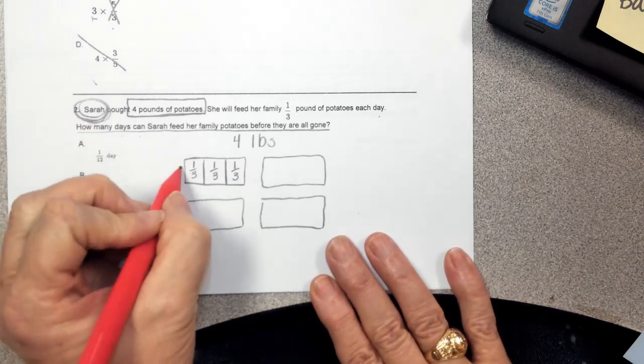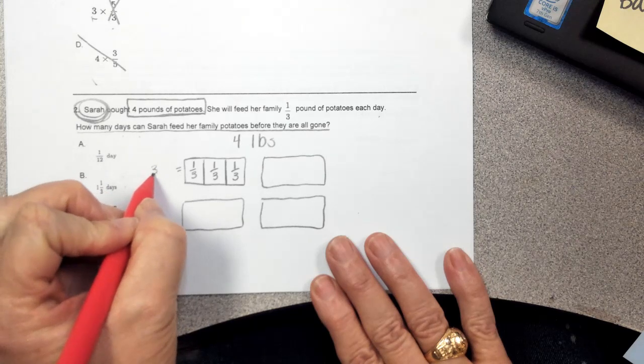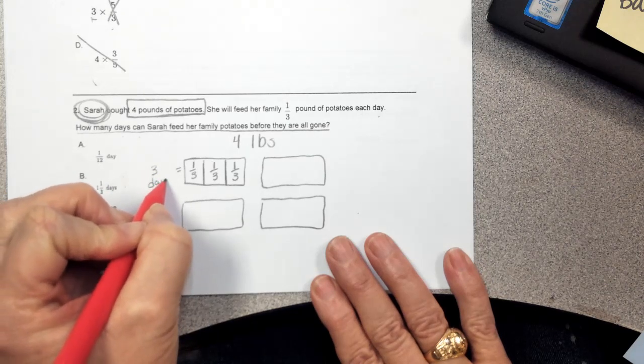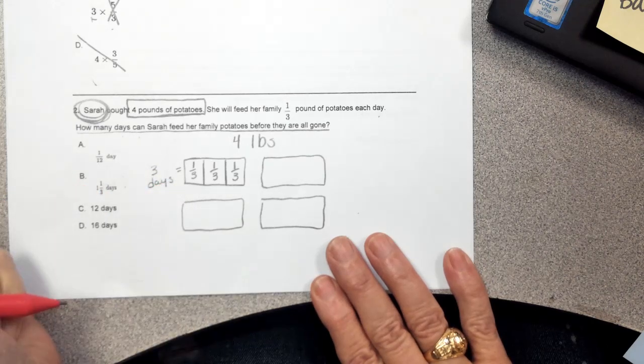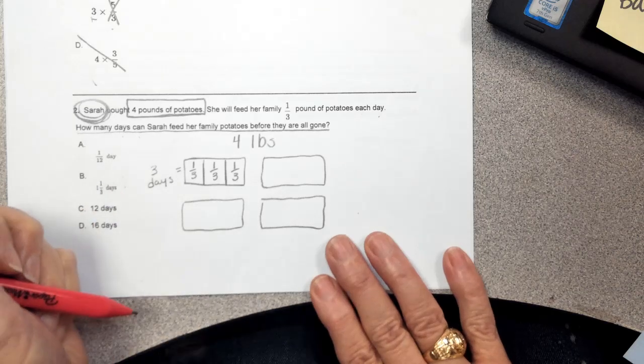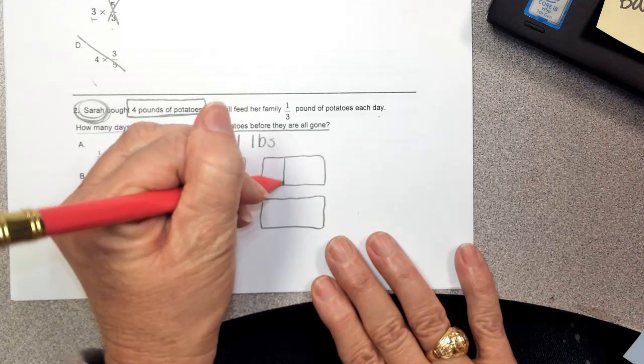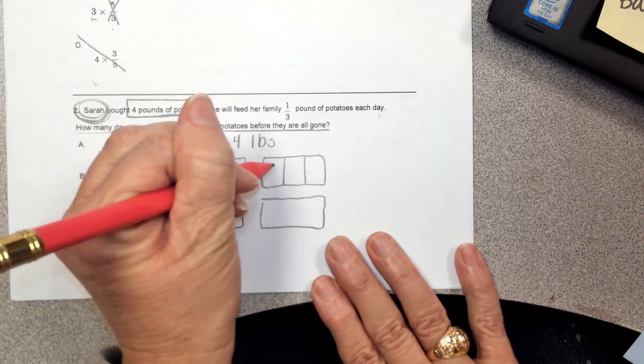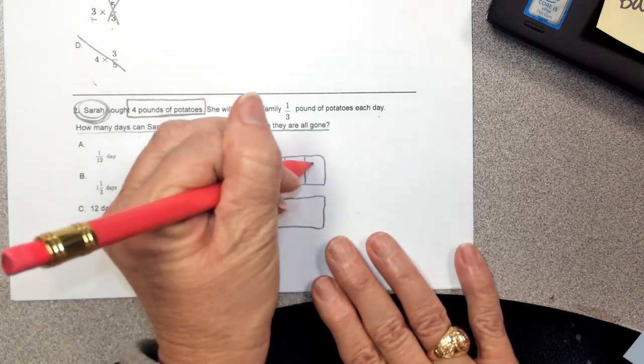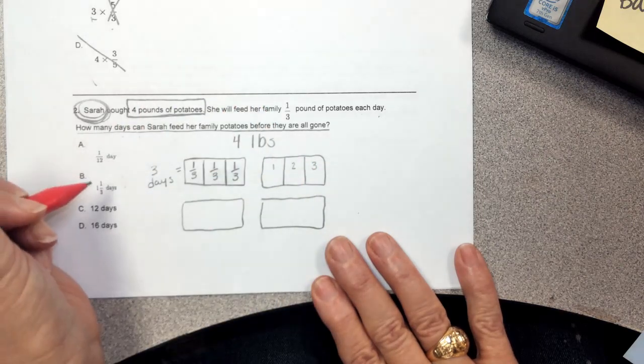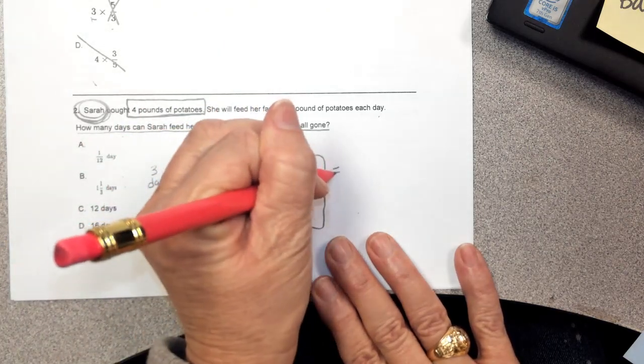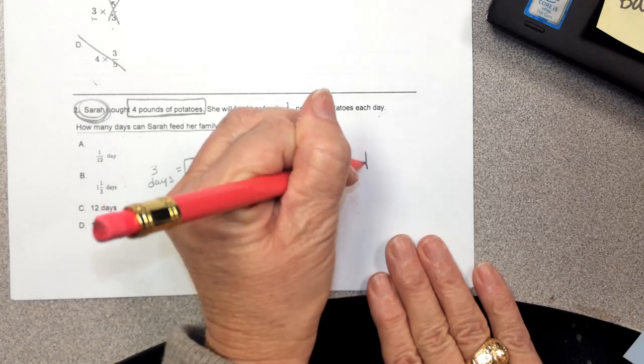So right now, this first picture, I can feed my family for three days. But I have three more pictures that I need to cut apart. So I'm going to go to my second picture and I'm going to cut it into thirds as well. One-third, two-thirds, three-thirds. And that would be three more days for a total of six days.